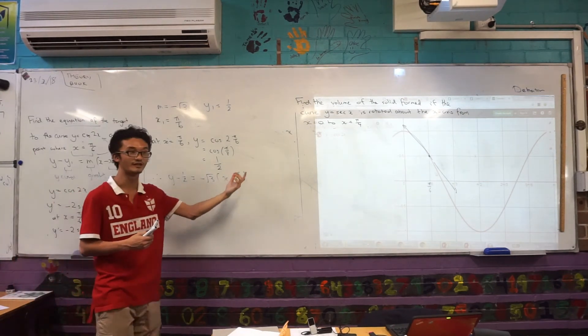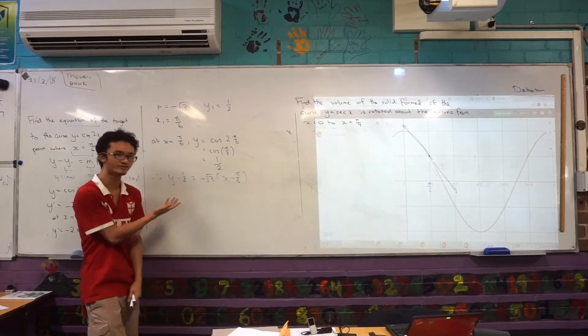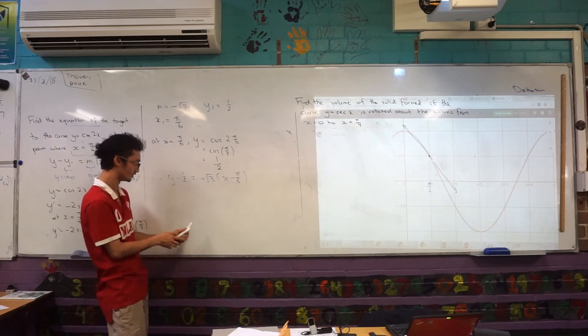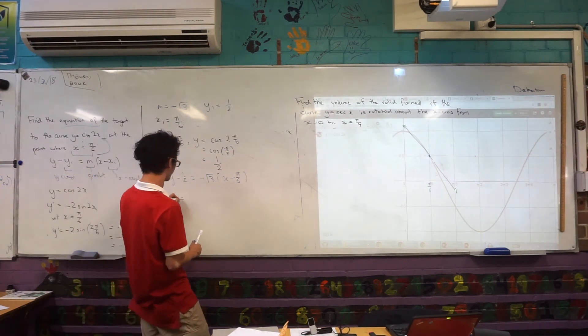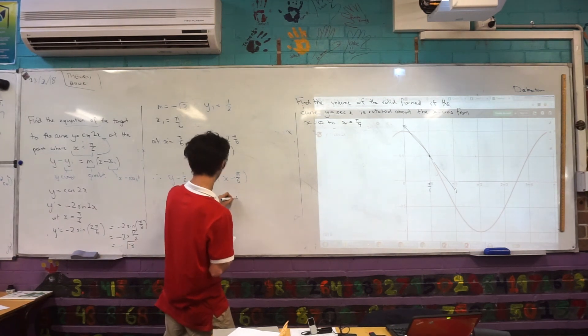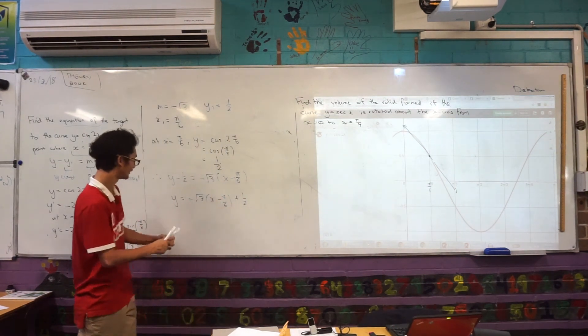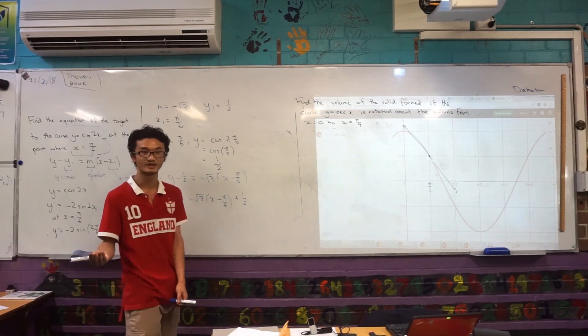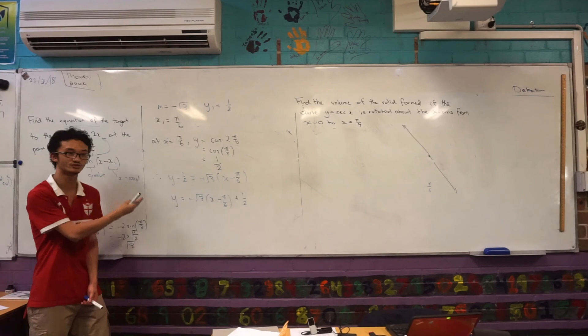This is actually correct. You're more used to seeing it in the point gradient form, but there's really nothing wrong with this answer. It's not incorrect at all. You could take an extra step and you could bring the minus a half over, you could say y equals negative root 3(x minus π/6) plus a half. Okay, but again, this is a perfectly fine answer, because you've answered the question. What's the equation of the tangent? That's what they're looking for, and that's what you need to give. Okay.